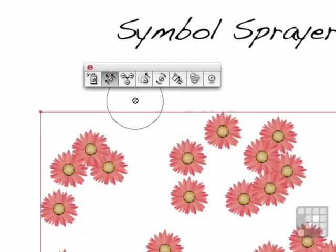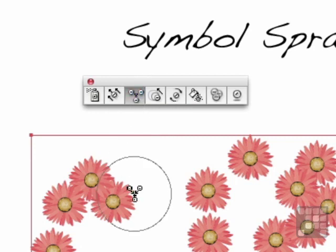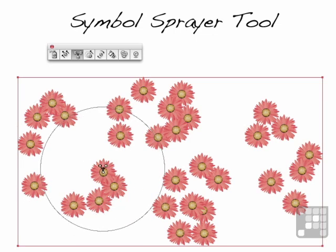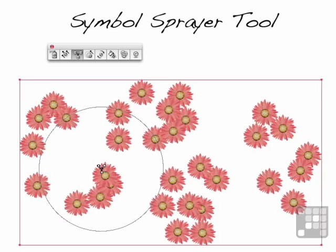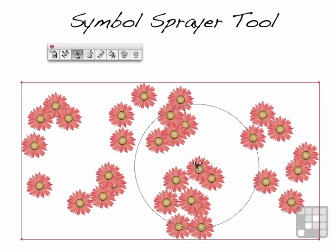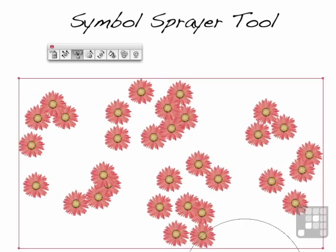The next one over here is called the Symbol Scruncher. I'm going to make the brush a little bit bigger for this one. Now I'm going to position the brush right on center on that flower — watch what happens. Things become magnetized and move toward the center. So it's like a big magnet. The bigger the brush, the more you're going to attract and pull in. If you want to push them away, hold the Alt key down — it does the exact opposite and will push them away.